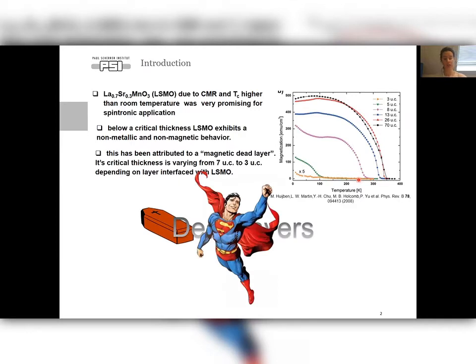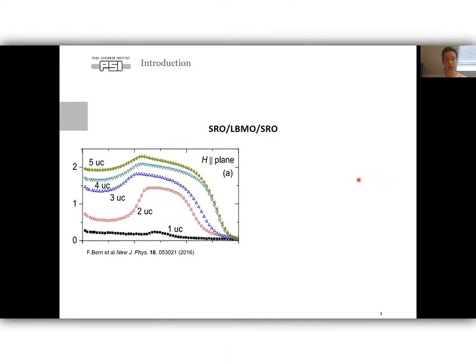However, LSMO magnetism can be rescued. It's been found experimentally that in heterostructures based on ruthenates and lanthanum manganides, lanthanum manganides remain magnetic down to 1 unit cell. As shown here in the figure of the magnetization for three layers, SRO, LBMO, SRO, LBMO, SRO, LBMO, SRO remain magnetic down to 2 unit cells.